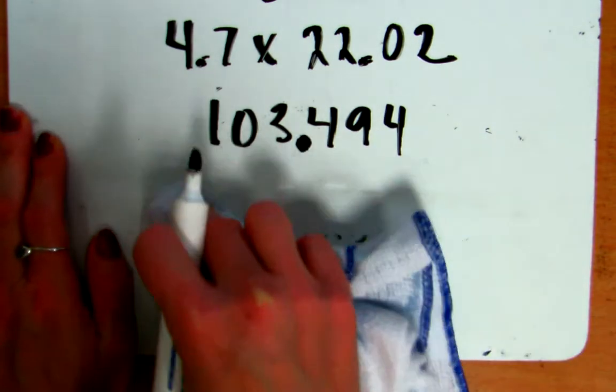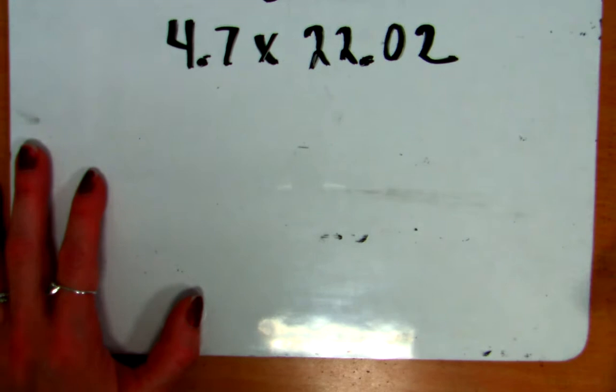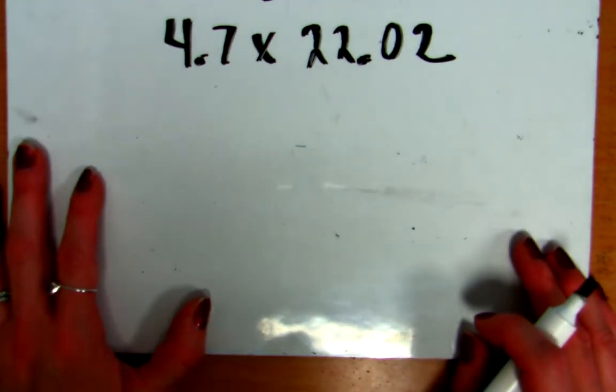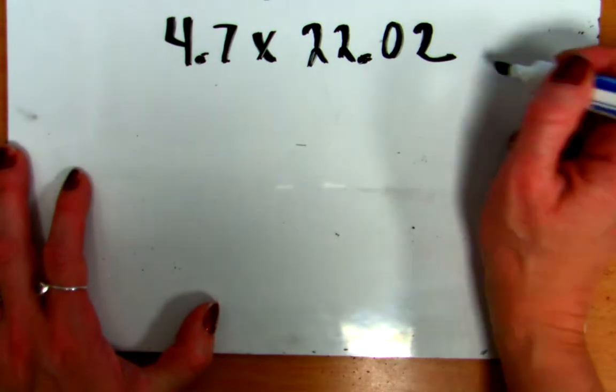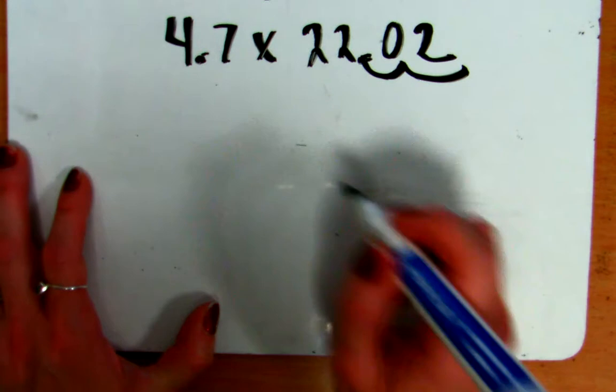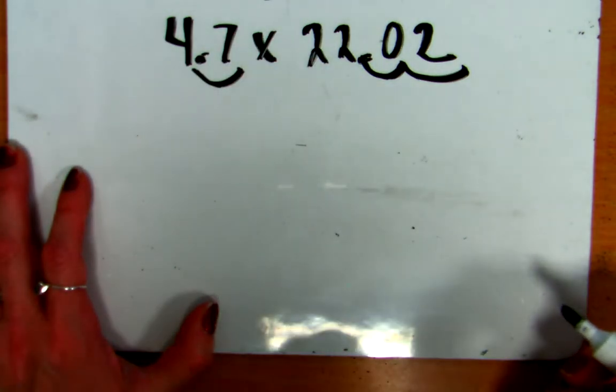So, other options. Count the decimal points. Counting the decimal points is fine as long as you know why you are doing that. So, counting the decimal points. You count all the spaces to the right of the decimal point. So, here we have 1, 2 spaces. Here we have 1 space. That gives us a total of 3 spaces.